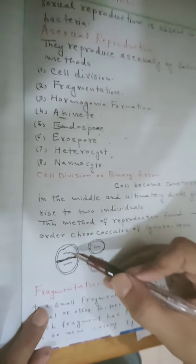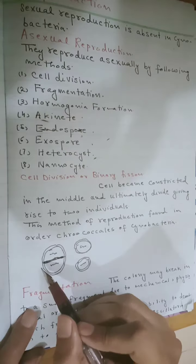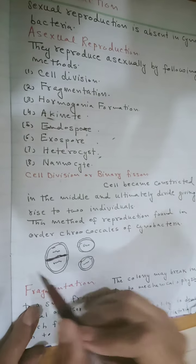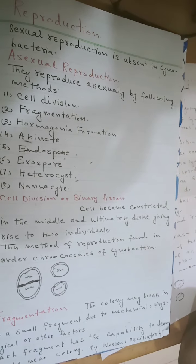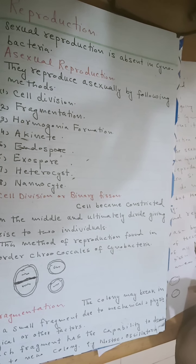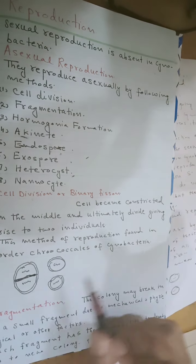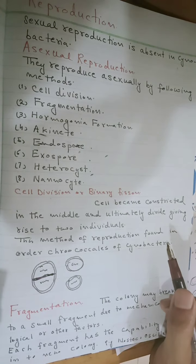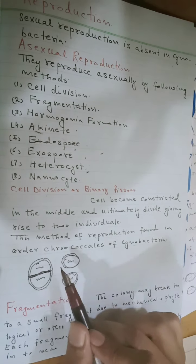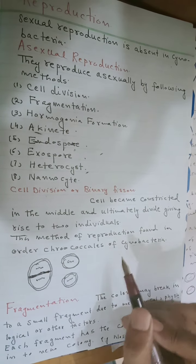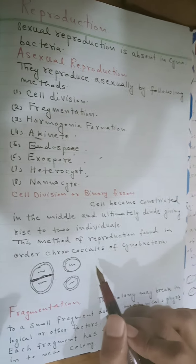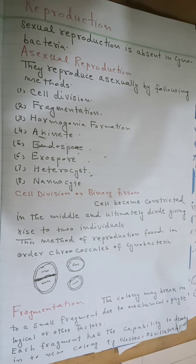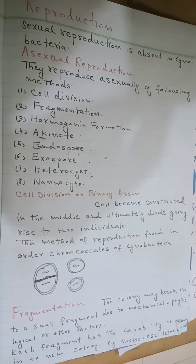So in binary fission, the genetic material is first divided into two, then a constriction divides the cell into two daughter cells. This is called cell division or binary fission.